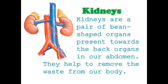Kidneys. Kidneys are a pair of bean-shaped organs present towards the back in our abdomen. They help to remove waste from our body. Ask your mummy to show you rajma beans — our kidney looks just like them. The kidney is located towards the back of our abdomen and helps to remove unwanted things from our body.